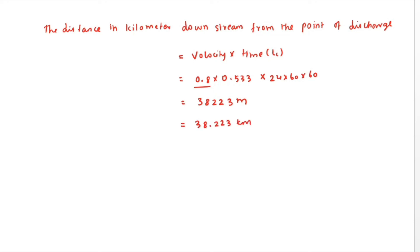So the wastewater will be purified in 38.223 kilometers through the process of self-purification, and reaeration will be completed at 38.223 kilometers. This is the method to solve the problem. We will see more in the next video. Thank you.